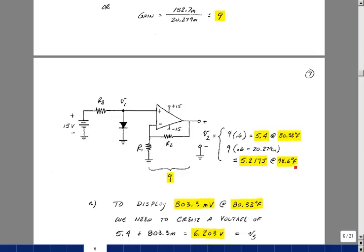Now, if the temperature did go up to 98.6, then we would be subtracting this 20.279 millivolts, and that would be 5.2175 volts. So, of course, what's happening here, as temperature goes up, the voltage is going down.